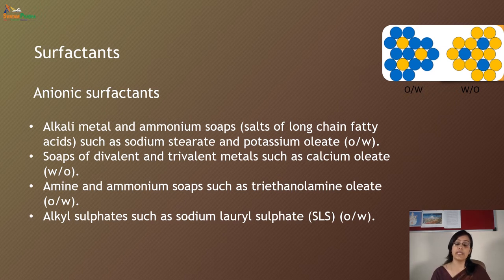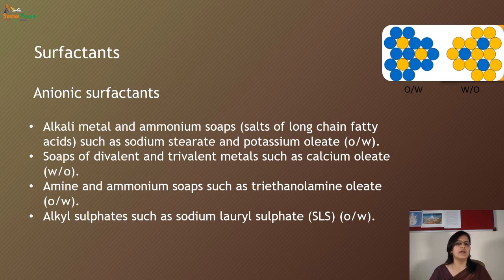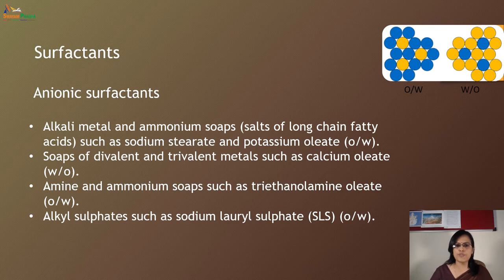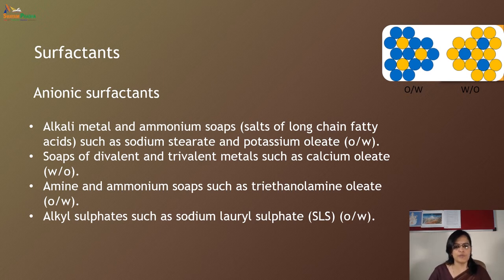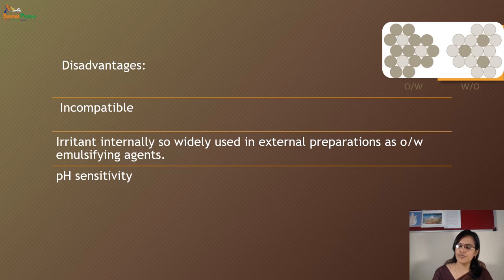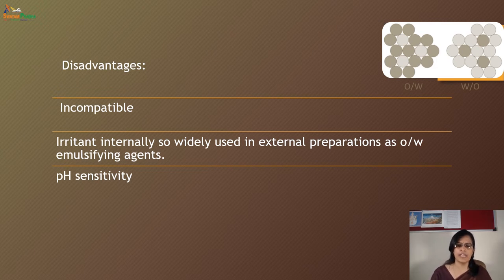Surfactants are another type of emulsifying agent, as discussed in previous modules. Anionic surfactants include alkali metal and ammonium soaps — salts of long-chain fatty acids such as sodium stearate and potassium oleate — soaps of divalent and trivalent metals such as calcium oleate, amine and ammonium soaps such as triethanolamine oleate, and alkyl sulfates such as SLS (sodium lauryl sulfate). The disadvantage of using anionic emulsifying agents is that they are incompatible, irritant internally, and are widely used only in external preparations, with pH sensitivity.